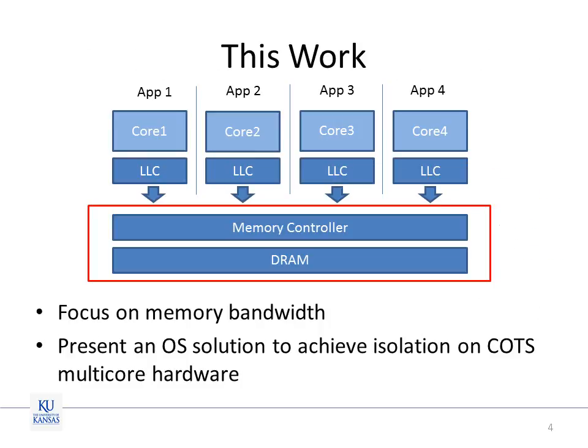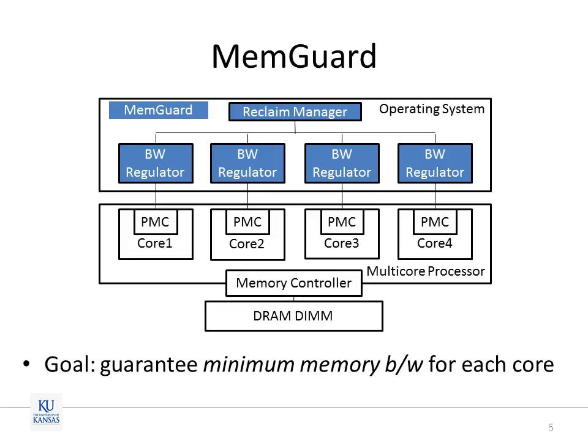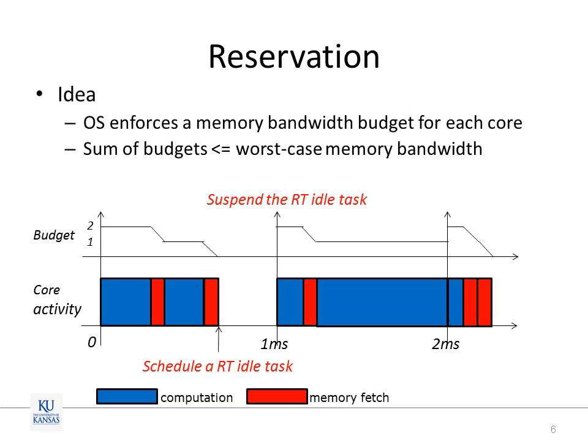So, in this work, we focus on memory bandwidth and present an OS solution to achieve performance isolation on COTS multicore hardware platforms. The software system that we have developed is called MemGuard. The goal of MemGuard is to guarantee minimum memory bandwidths for each core. We achieve this goal through memory bandwidth reservation.